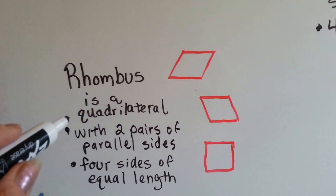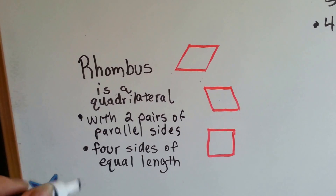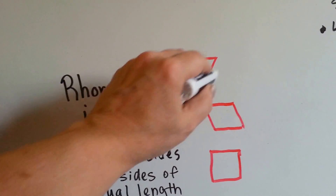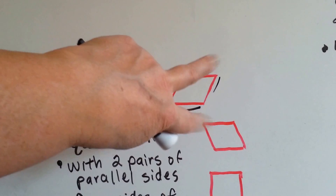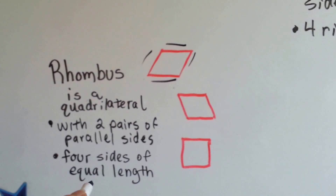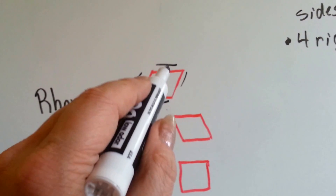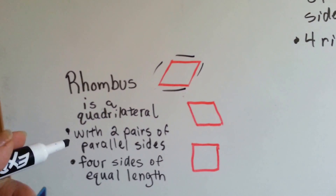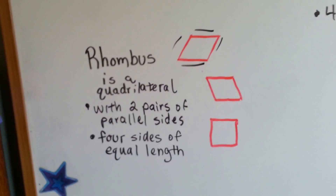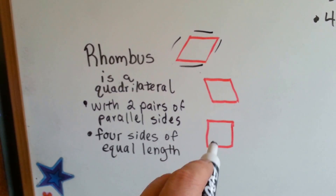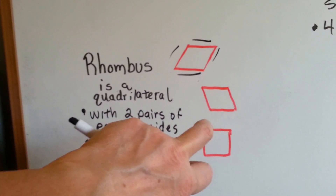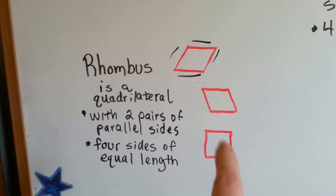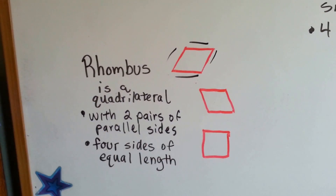Now let's look at the rhombus. The rhombus is a quadrilateral, a four-sided polygon, and it's got two pairs of parallel sides. This side is parallel to that side, and this side is parallel to that side — one pair, two pairs. Four sides of equal length; this and this and this and this are all the same length. Almost like a square that's leaning off to the side. Does a square have two pairs of parallel sides? Yes — one, two. Does it have four sides of equal length? Yes. So a square could be a rhombus.